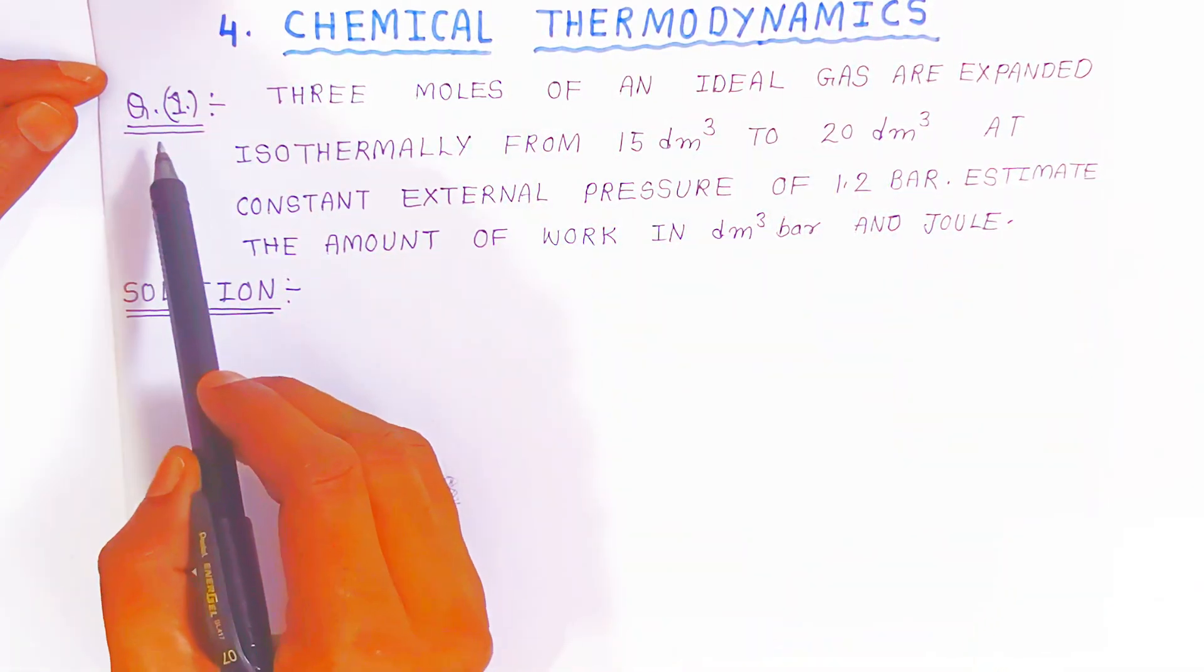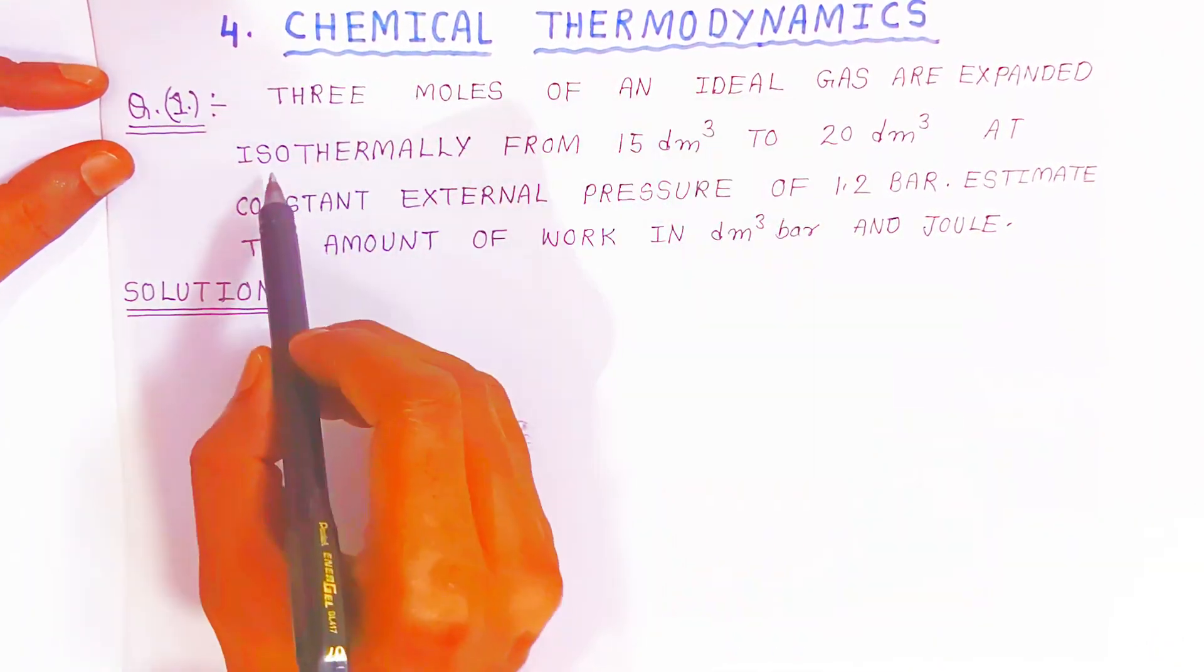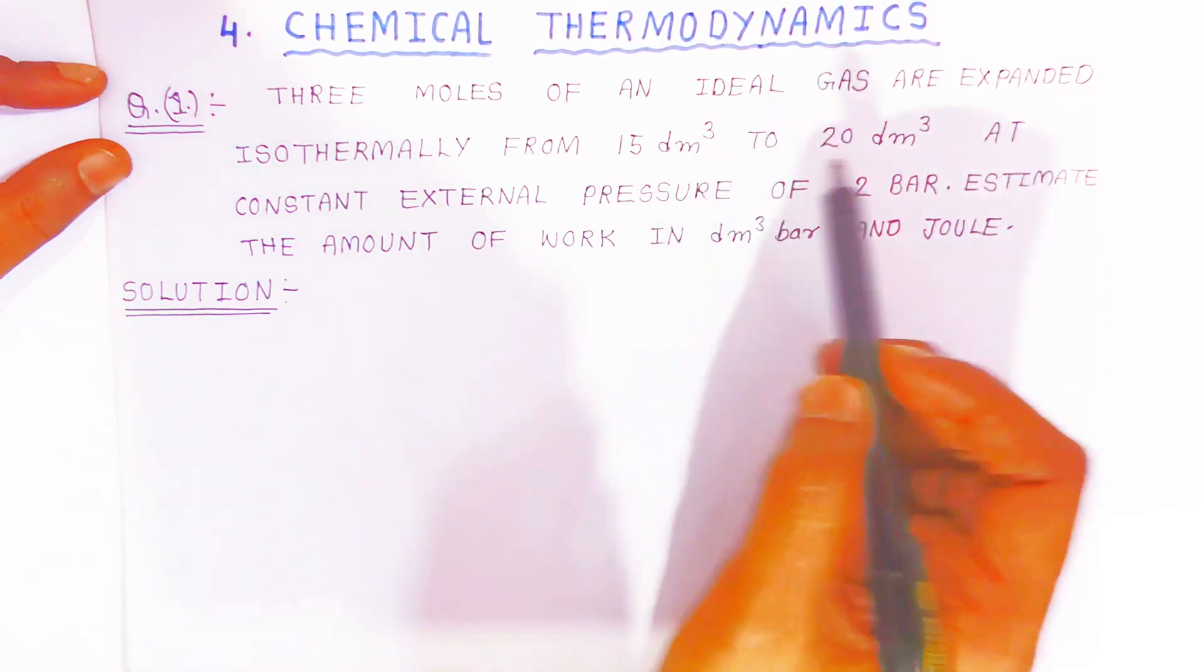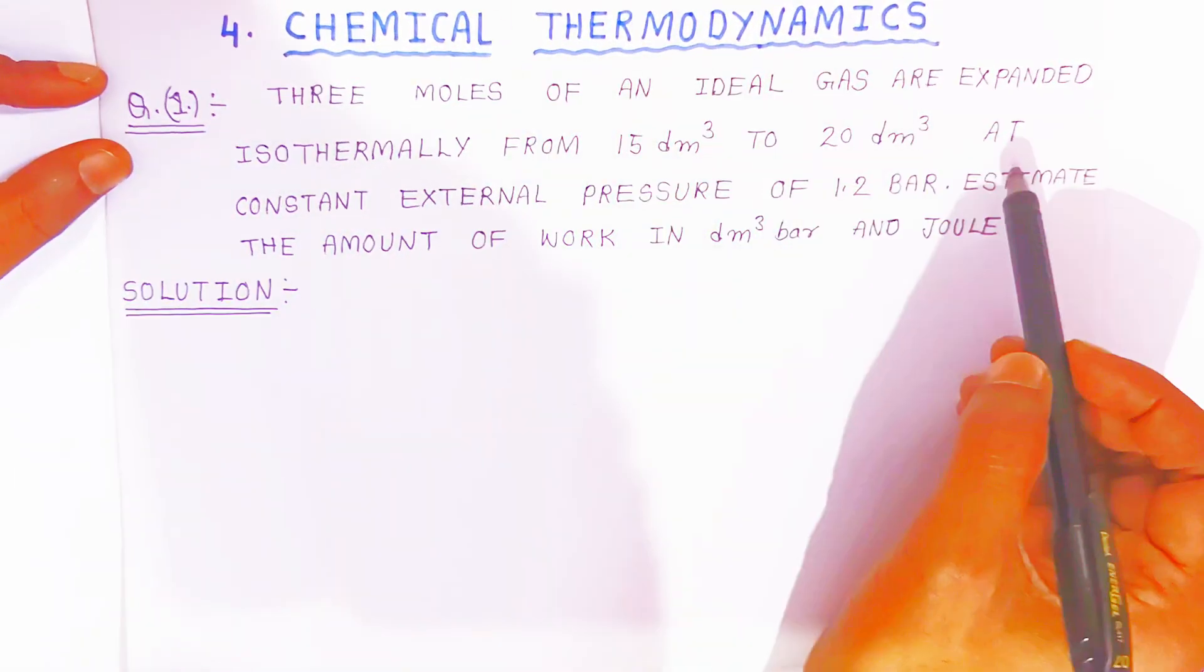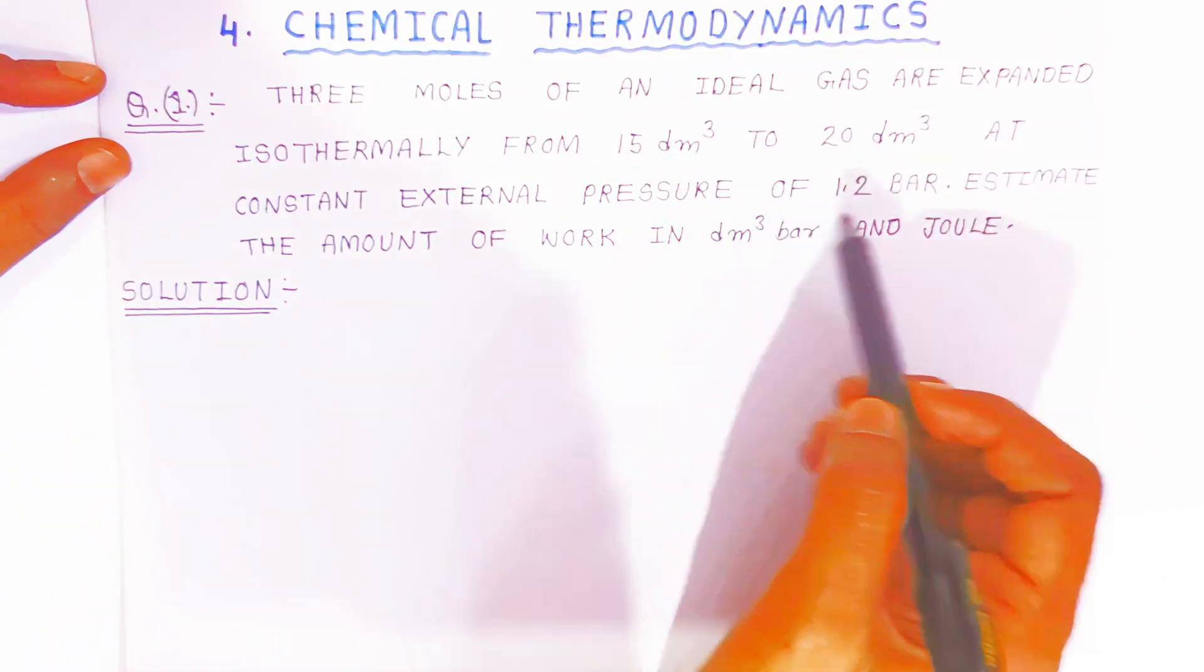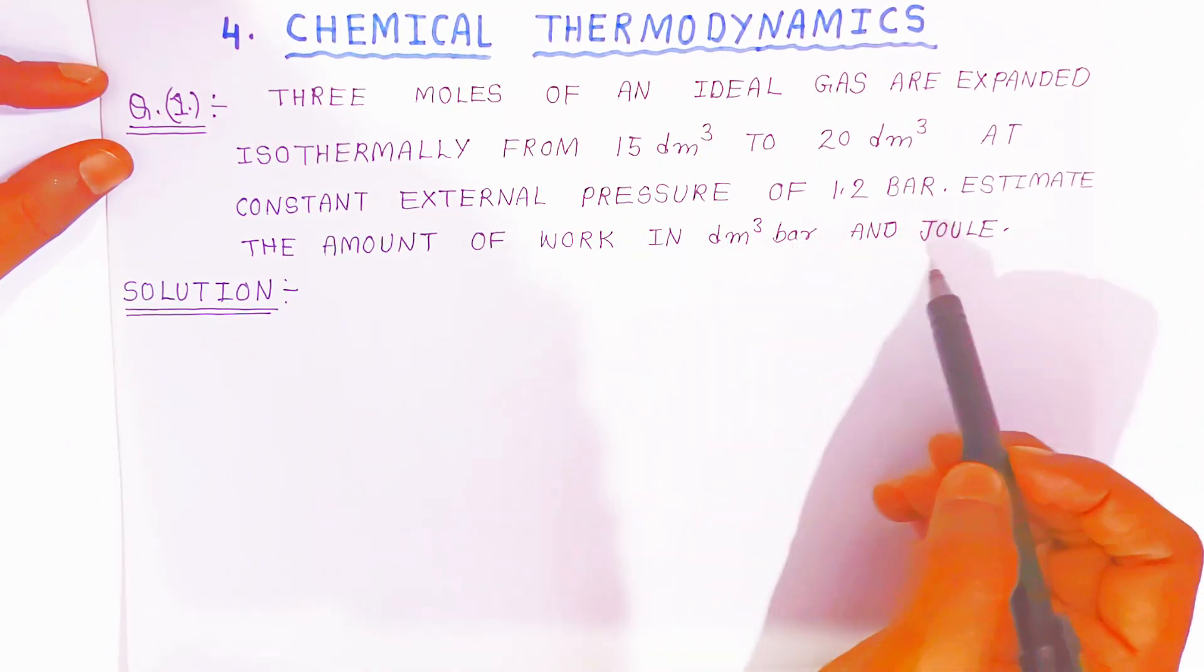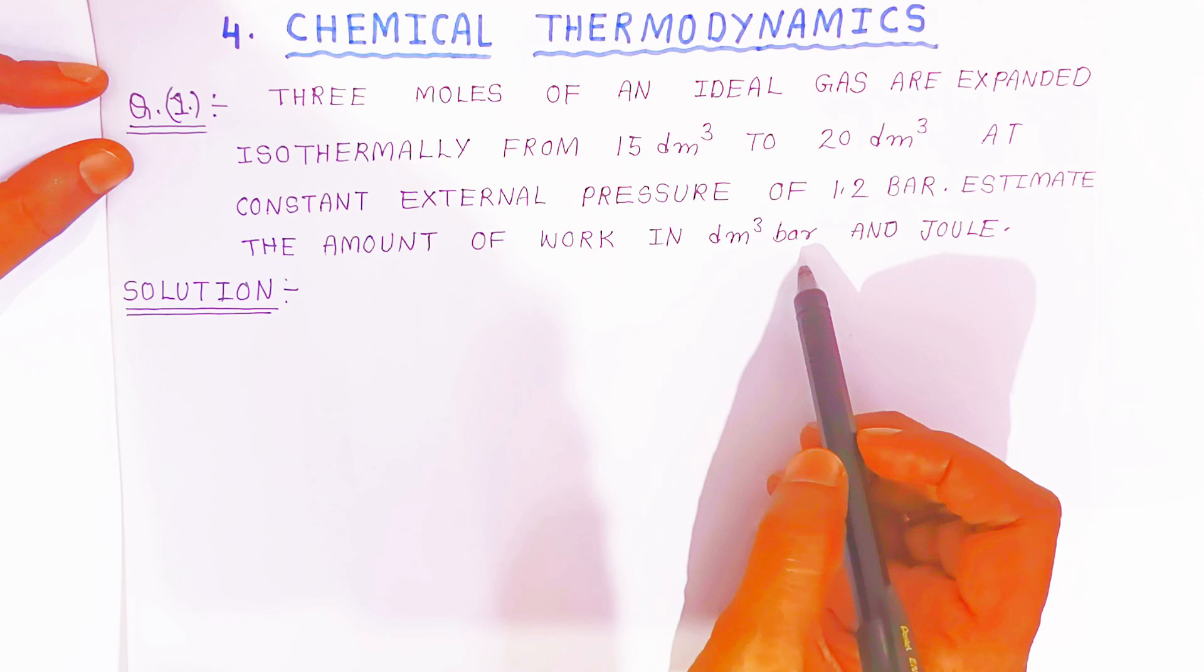The first question: three moles of an ideal gas are expanded isothermally. Here students, isothermally word is very important. From 15 dm³ to 20 dm³, that means 15 liter to 20 liter, at constant external pressure of 1.2 bar. Estimate the amount of work in dm³ bar and joule. We have to find the amount of work in dm³ and joule.